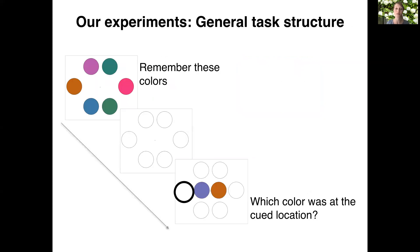To test this, we will use a standard visual working memory paradigm, in which we ask participants to remember a set of items and after a short delay, cue them to a location and ask them which color they saw at that location using a two-alternative forced choice. So this looks something like this.